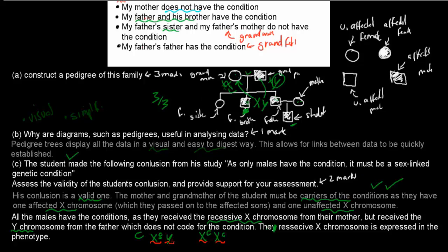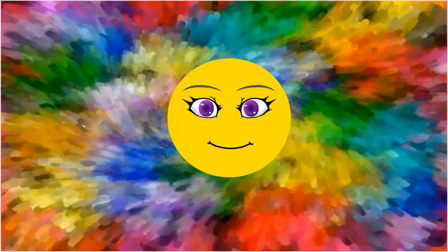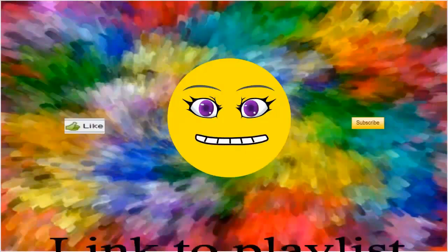This question came from two dot points: students will solve problems involving codominance and sex linkage — which was the sex linkage problem — and students will perform investigations to construct pedigree or family trees, which was part A. I hope that was useful. Thank you for watching.